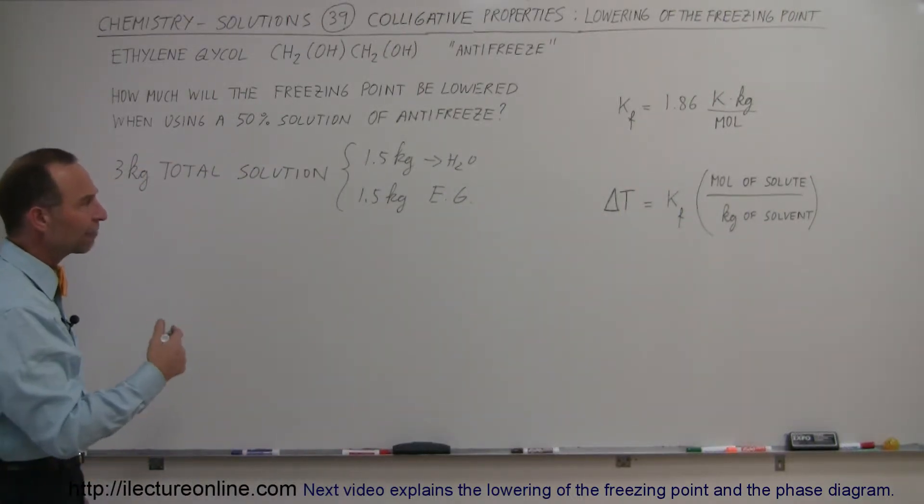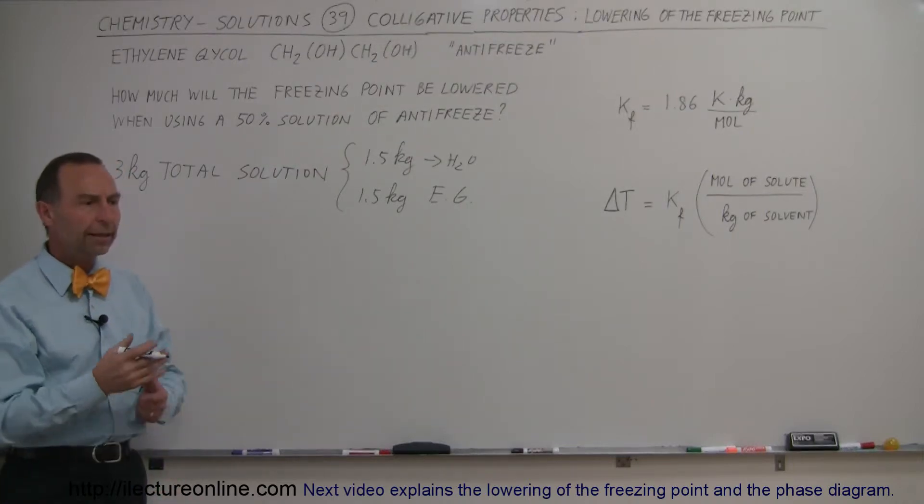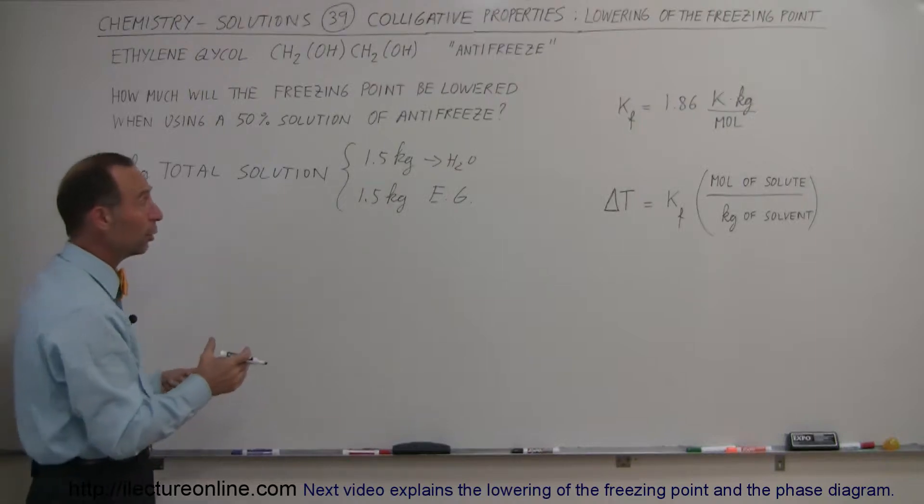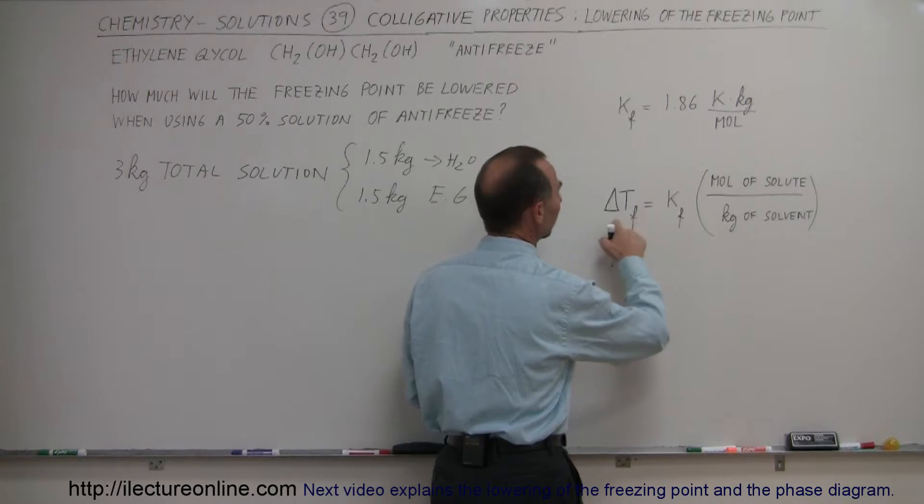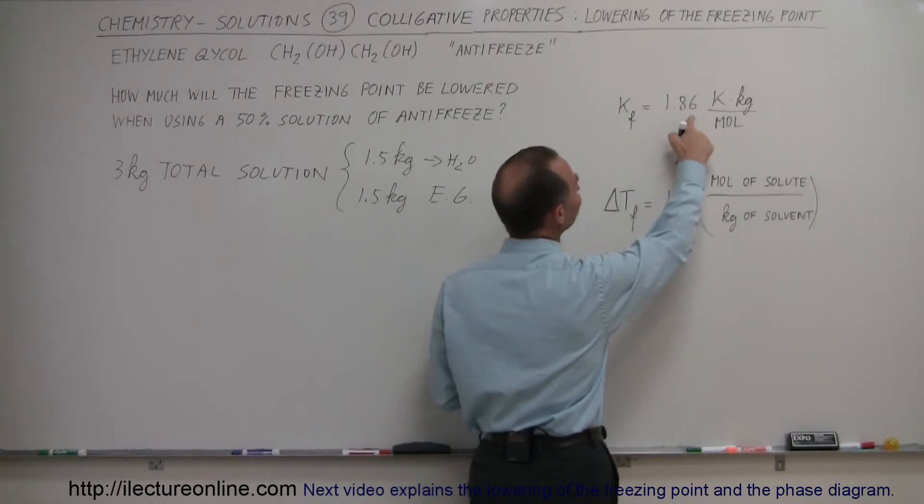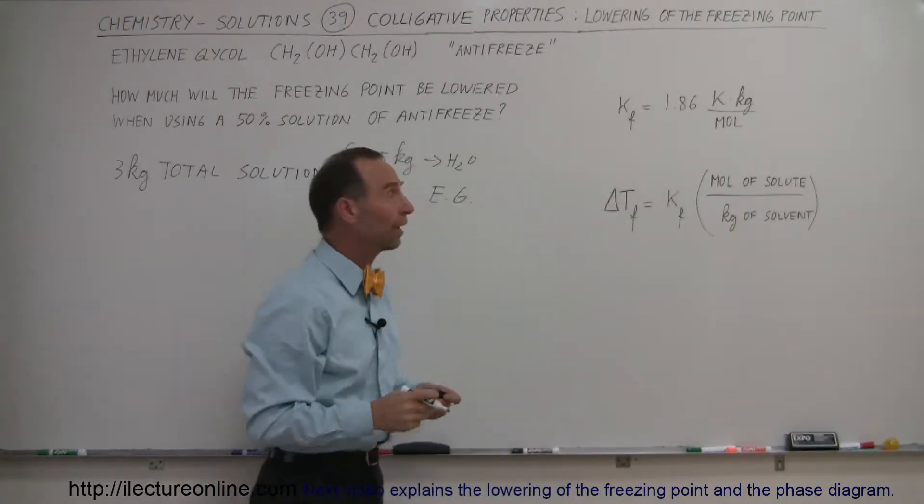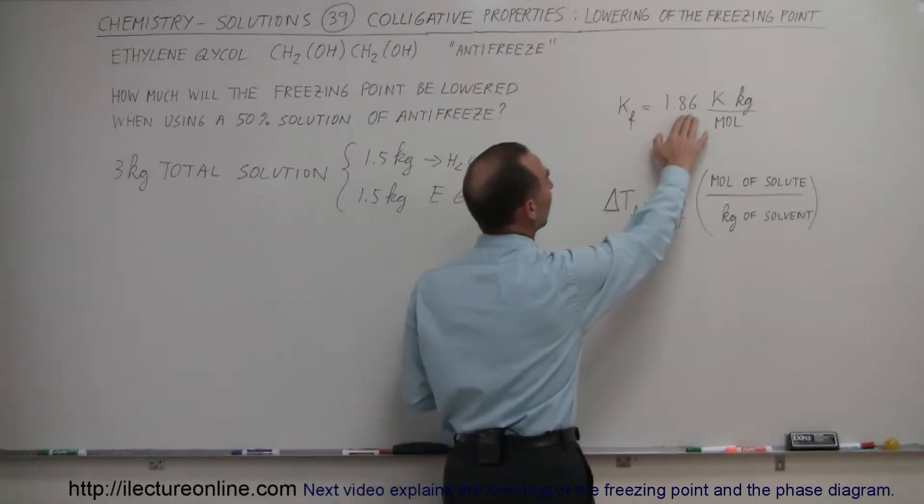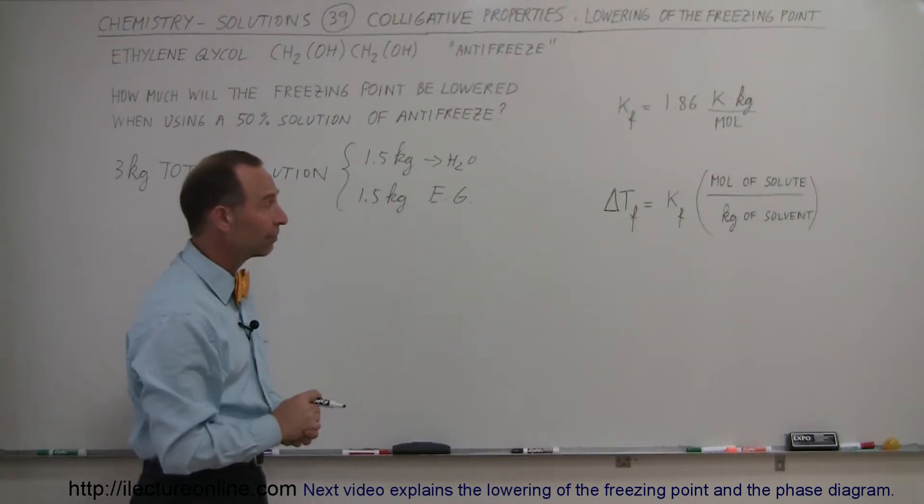If we add 1.5 kilograms of ethylene glycol to 1.5 kilograms of water, then how much will the freezing point be lowered? The equation is that the change in temperature, the change in the freezing point of the temperature, is equal to the constant for water, which is 1.86 Kelvin per kilogram times kilograms per mole. So for every mole of solute added to 1 kilogram of water, the freezing point will be lowered by 1.86 degrees Kelvin.